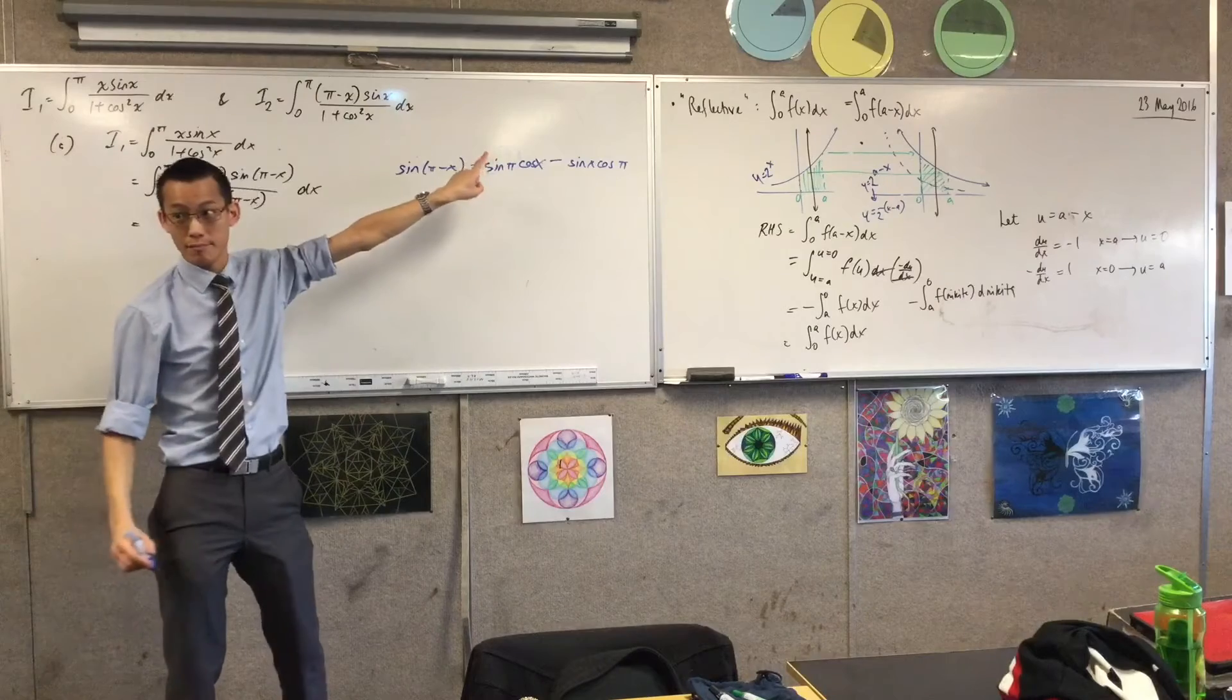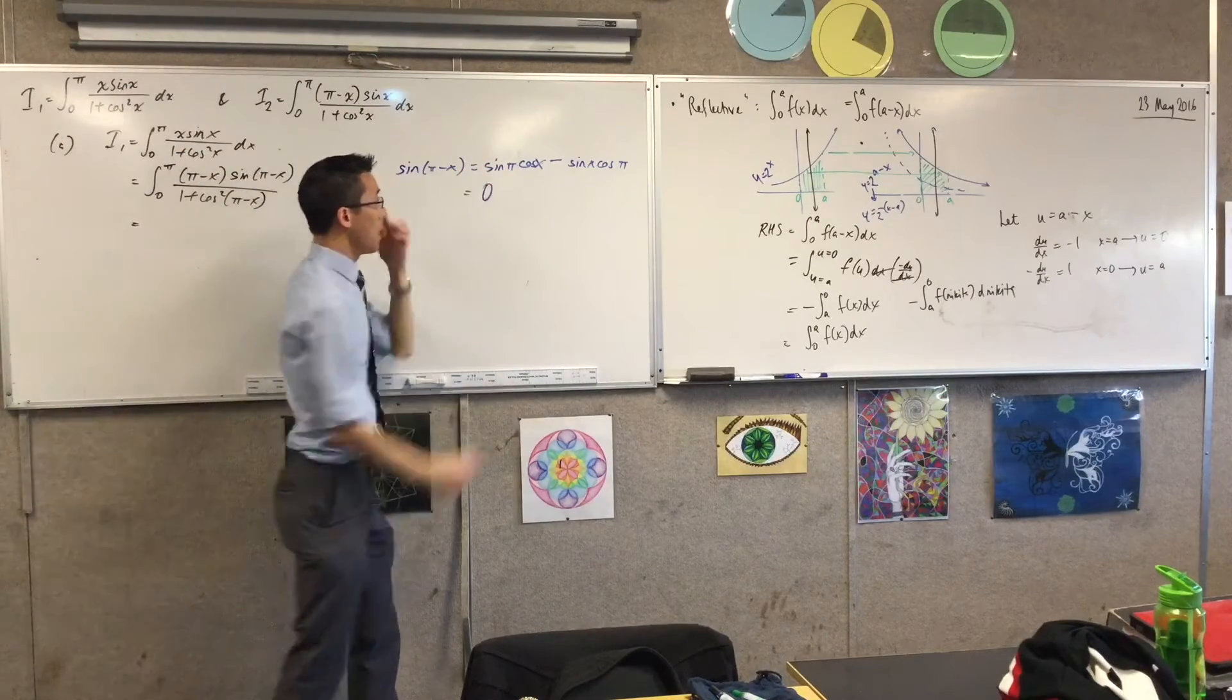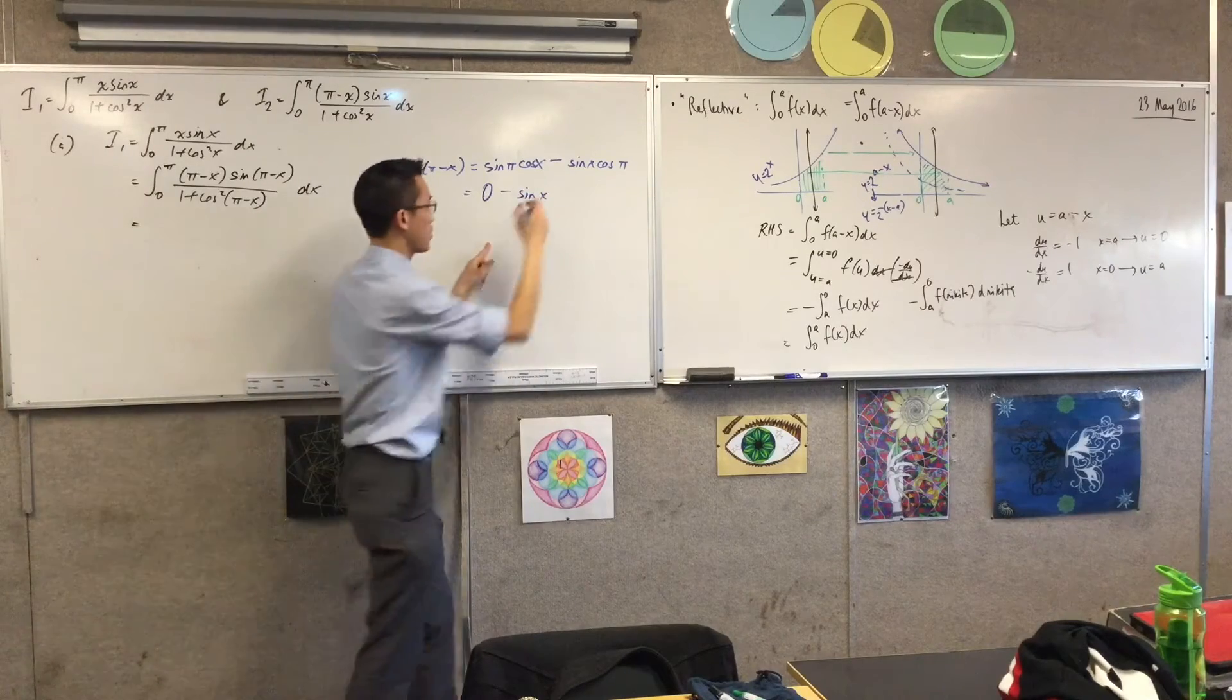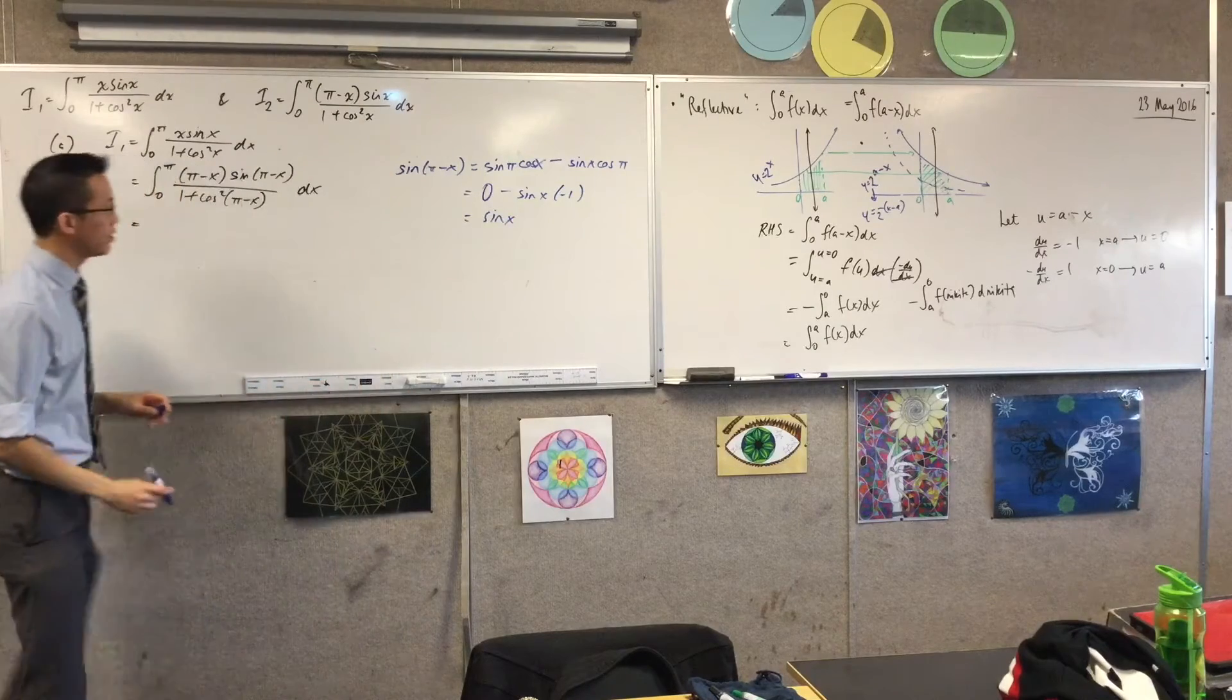Okay. What's sine π? Sine π? It's zero. You've got a negative. There's a sine x. What's cos π? Negative one. Bam. That's exactly what I wanted.